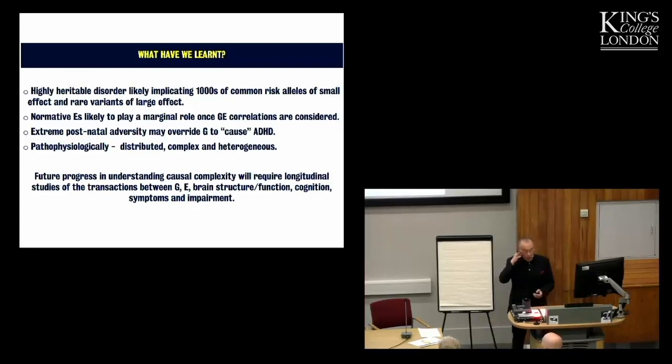So overall, what have we learned? I think we've learned an awful lot, but the goal of that destination is still a long way off. Highly heritable disorder, likely implicating thousands of common risk alleles of small effect, and rare variants of large effect perhaps. Normative environments like to play a marginal role once gene environment correlations are accounted for. Extreme postnatal adversity may override genetic factors to cause ADHD. And the pathophysiology of ADHD is distributed, complex, and heterogeneous. So future progress, I think, in understanding causal complexity will require longitudinal studies of the transactions between genes, environments, brain structure, function, and cognition. Just the sort of research that we're trying to set up here in the department. Thank you.